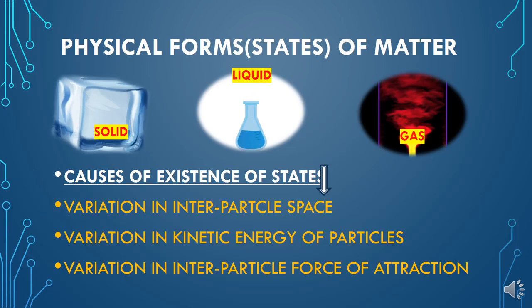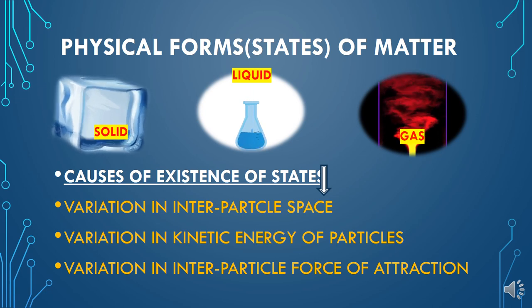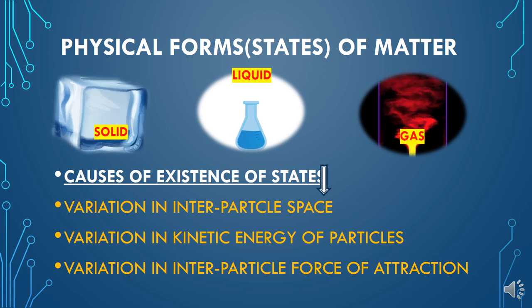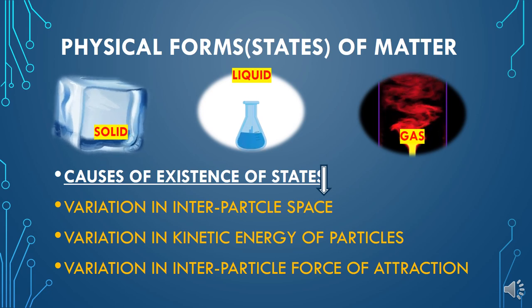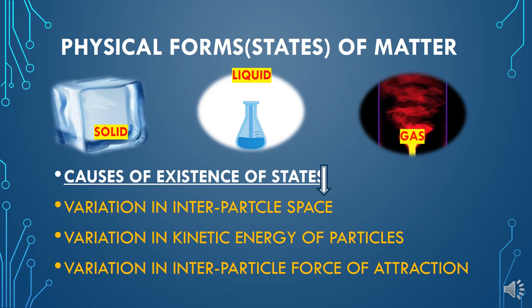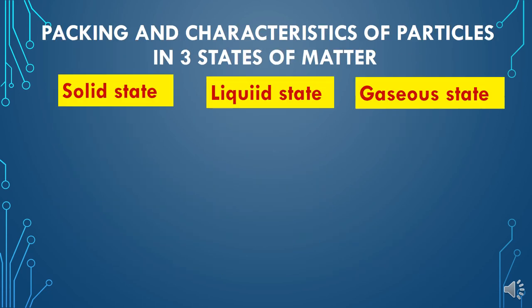Matter mainly exists in three states, and the causes of existence of matter in these three states are: the variation of inter-particle space, the kinetic energy of particles — whether higher or lower — and the force of attraction by which the particles are bound with each other. These are the three characteristics responsible for the existence of a variety of states. Next, we will discuss how these particles are arranged in different states and how they are characterized.